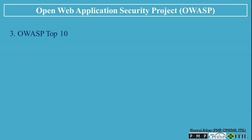OWASP Top 10. Now let's talk about the OWASP Top 10, one of the most important projects by OWASP. It's a list of the top 10 most critical web application security risks that organizations face. The OWASP Top 10 is updated regularly to reflect the evolving landscape of security threats, and understanding these risks is crucial for developers and security professionals alike. Let's dive into the latest OWASP Top 10.